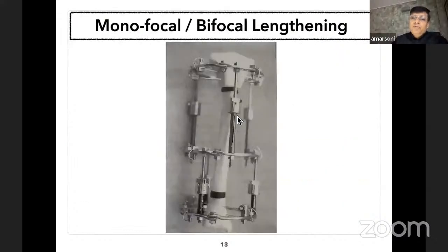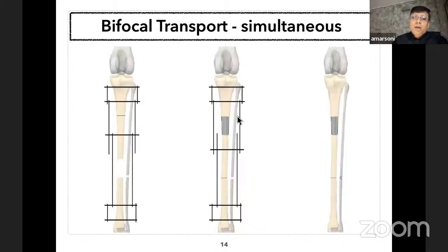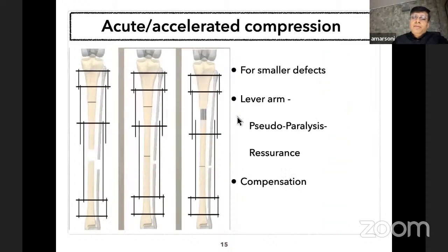There is a difference between monofocal, bifocal, and trifocal treatment. In monofocal lengthening there is a single corticotomy; in bifocal lengthening there is a double corticotomy. When we use the term bifocal transport, distraction is occurring at the corticotomy and compression is occurring at the fracture or gap site simultaneously. When the gap is small, one can do acute or accelerated compression at the docking site and gradually distract the corticotomy site.